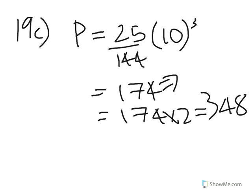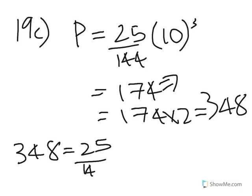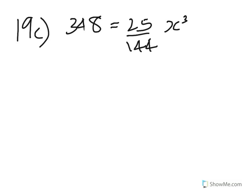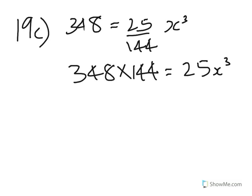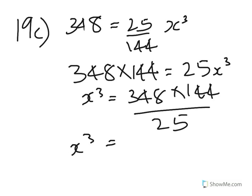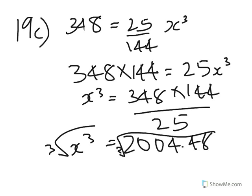Now we know the power is 348 when the wind speed is X, so we substitute back into the original equation: 348 equals (25/144) times X cubed. Multiply both sides by 144: 348 times 144 equals 25X cubed. Divide both sides by 25: X cubed equals 348 times 144 divided by 25, which is 2004.48. Cube root both sides: X equals the cube root of 2004.48, which is 12.6, correct to three significant figures.